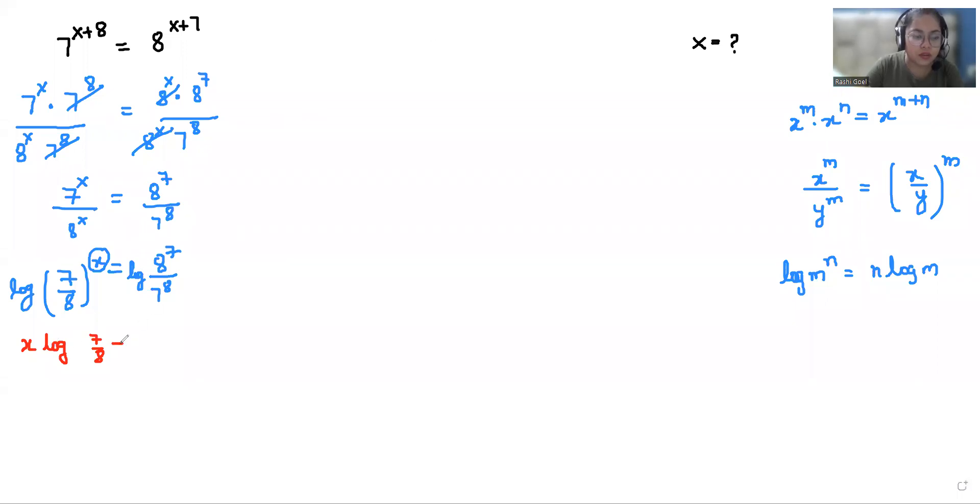It equals log(8^7 / 7^8). So if I divide both sides by log(7/8), we can eliminate it. So x equals log(8^7 / 7^8) divided by log(7/8).